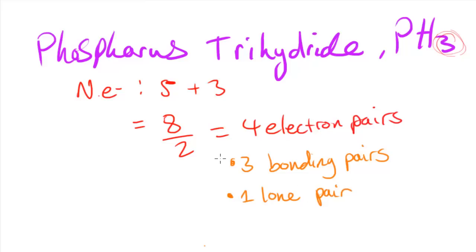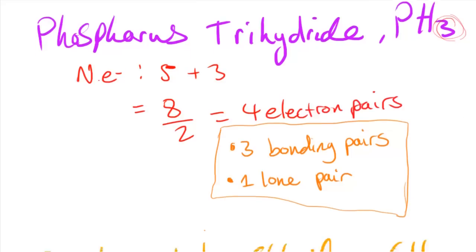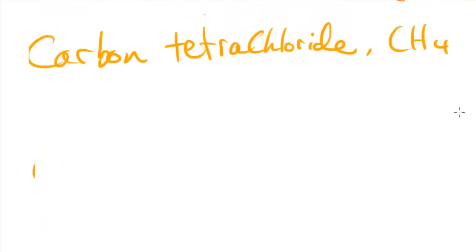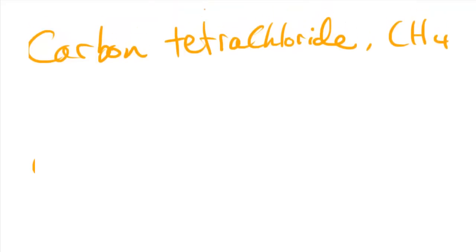This is how you work out how many bonding pairs and lone pairs are present. I'm not going to go into bonding angles and shapes of molecules in this video — just the bonding pairs and lone pairs deduction. I've got another example here: carbon tetrachloride.